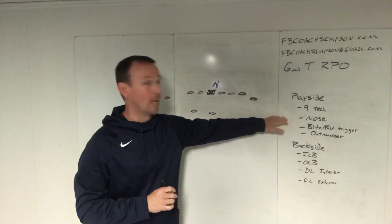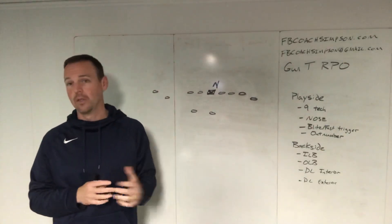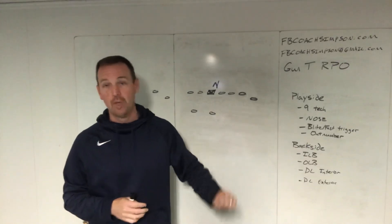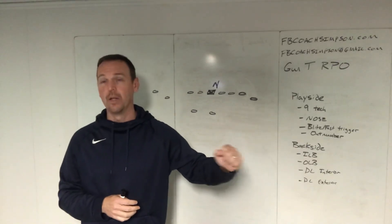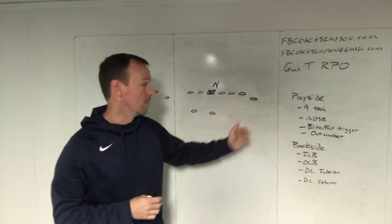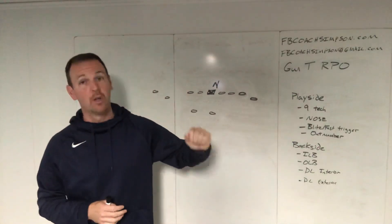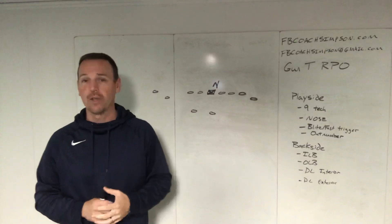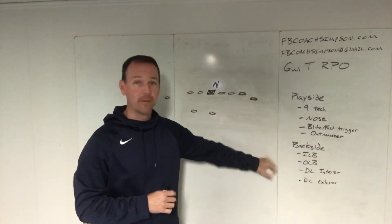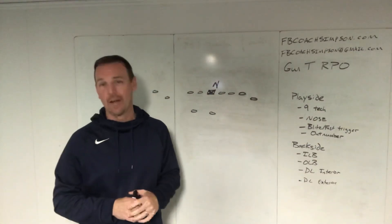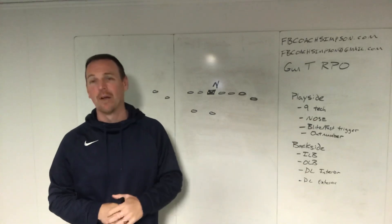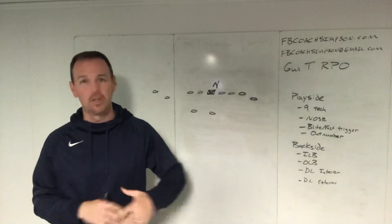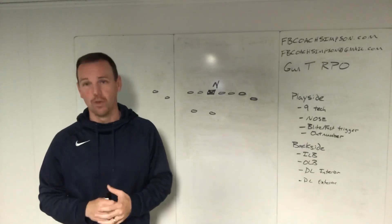Today we'll be talking about a shaded nose. Here's what I'll be going through this week: play side issues — nine technique we talked about yesterday, nose today, blitzers tomorrow, the next day if you're outnumbered. And then we're going to flip our attention the last half of the week to look at backside issues: backside inside linebacker, backside outside linebacker, backside interior defensive lineman, backside exterior defensive lineman — all the different potential issues and how do you answer those?